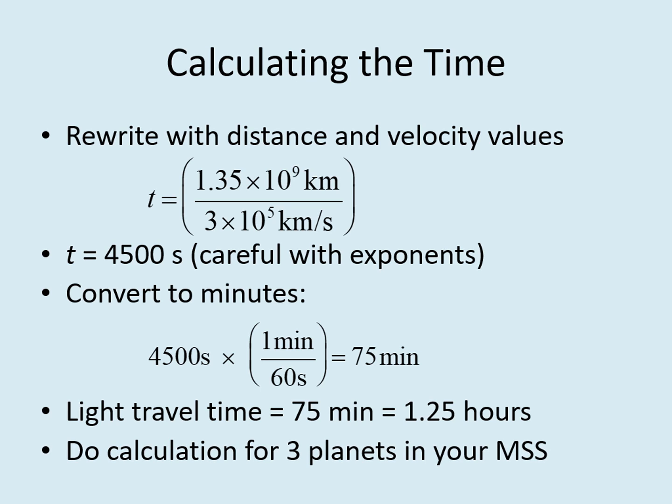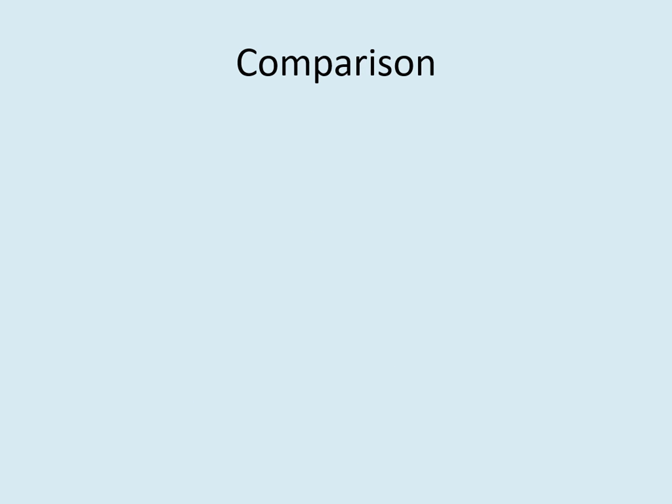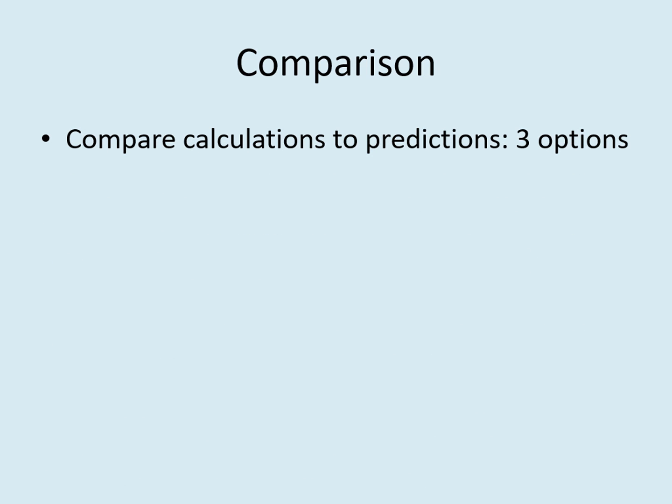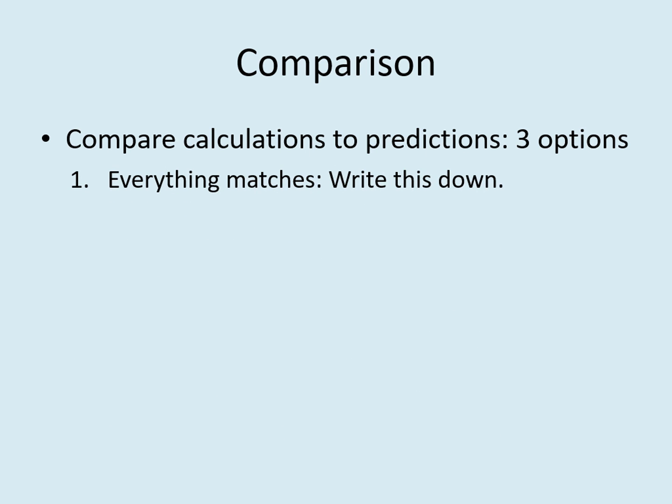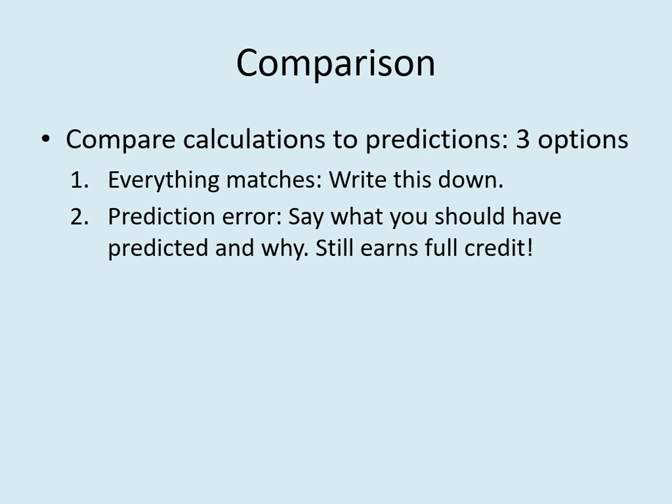With your own mystery solar system, you should do this calculation for three different planets, including the one you predicted will have the longest light travel time. Finally, check to see if your answers match your predictions. Did the right planet have the longest light travel time? Did you predict the right units? There are three possibilities. One is that everything matches up — in that case, just write down that they match so I know you did this step. Another possibility is that your calculations are fine but your prediction was off. Make sure you understand why the answer came out the way it did and explain what you should have said differently in the prediction. If you can show that you now understand what your prediction should have said, you'll get full credit anyway — you don't have to go back and change your prediction to get the points.